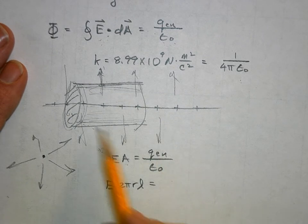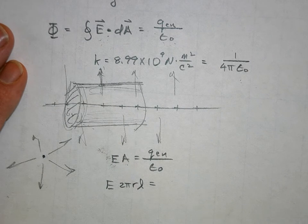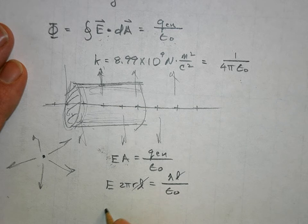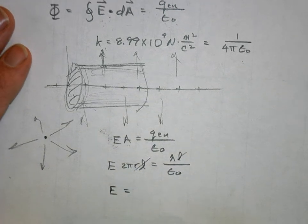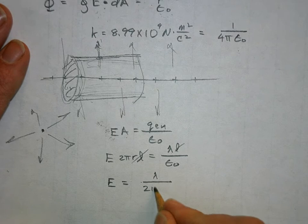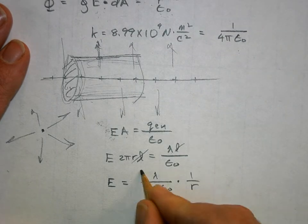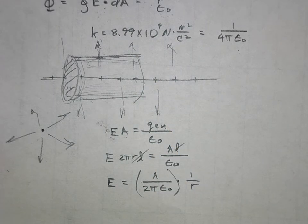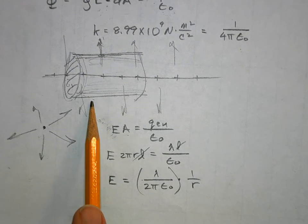How much charge is enclosed? It's the charge per unit length times the length. Charge per unit length is called lambda - the linear charge density - times the length, over epsilon naught. Solving for E: E equals lambda over 2πε₀, times 1/r. So the field diminishes inversely proportional to how far away we are from the wire.